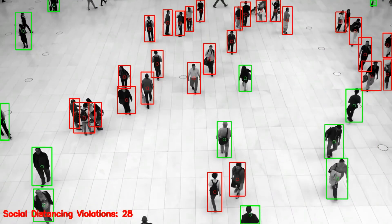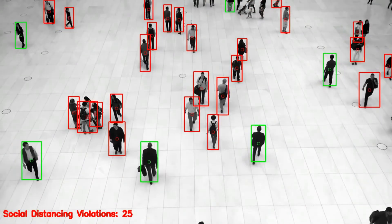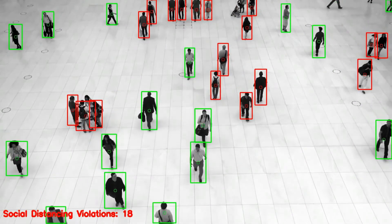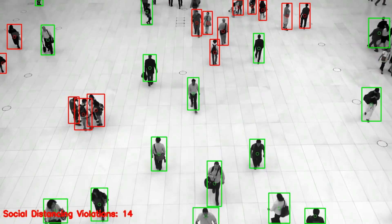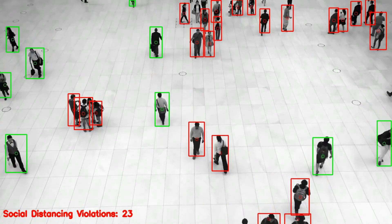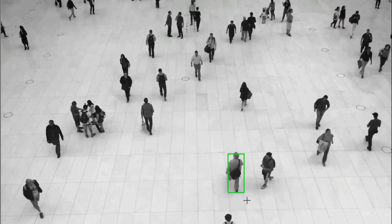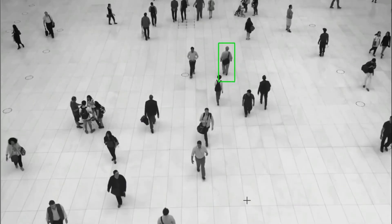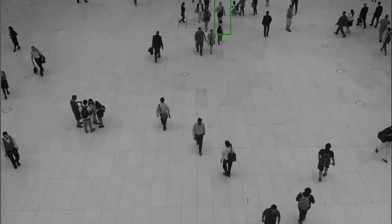A threshold distance is set to distinguish between people who violated and followed social distancing. People who followed social distancing are bounded by a green bounding box, while a red bounding box represents people who violated social distancing. The count of social distancing violations is also displayed on the bottom left of the screen. If a person has violated social distancing several times, we can track that individual so that the security guard reaches out to give advice or check their health conditions.